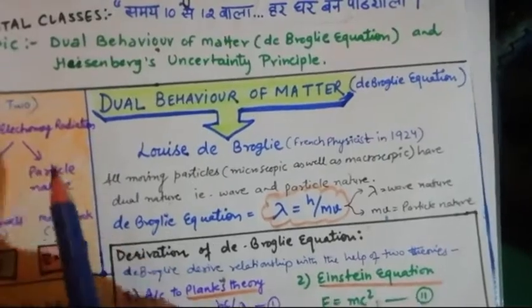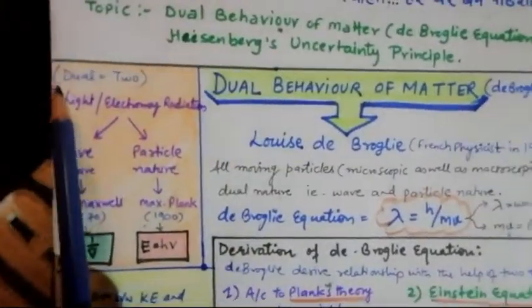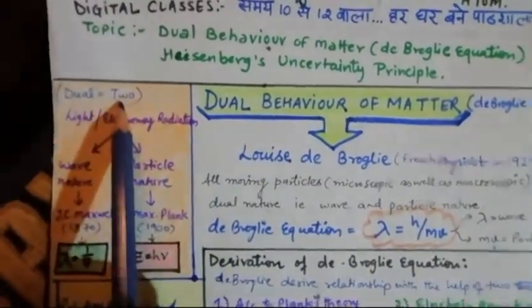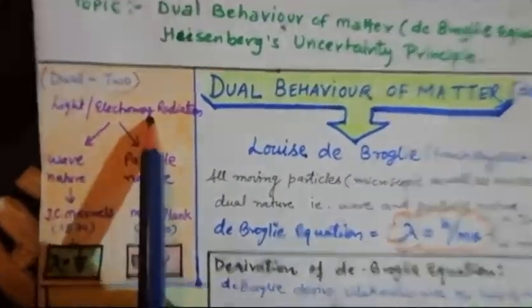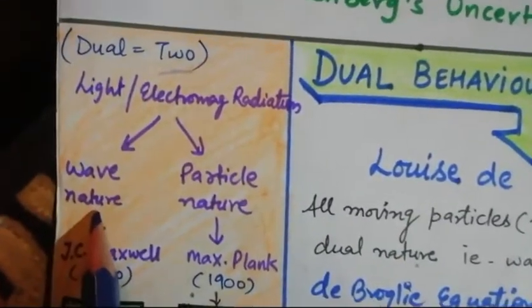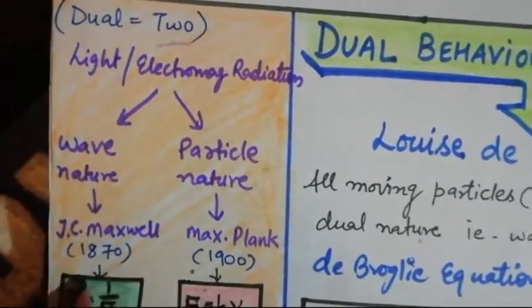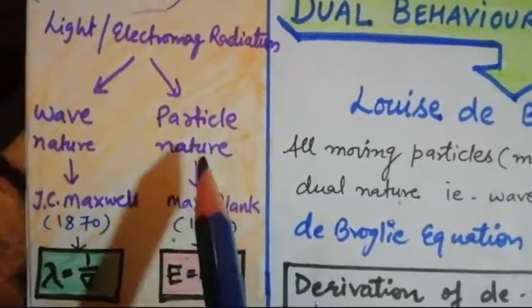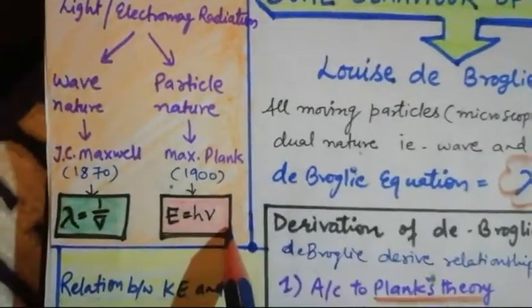An electron has both wave and particle nature according to these principles. The word 'dual' came from 'two' — it means that matter behaves with two natures. All light and electromagnetic radiations behave with two natures: wave nature and particle nature. Wave nature was explained by J.C. Maxwell in 1870, according to whom lambda is equal to one upon mu naught, and particle nature was given by Max Planck in 1900, that is E = hν.